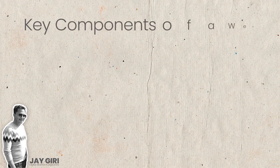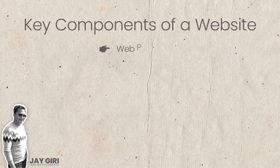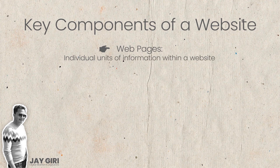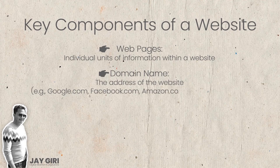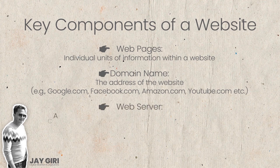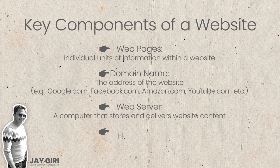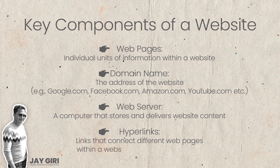Key Components of a Website: Web Pages — Individual Units of Information within a Website. Domain Name — The Address of the Website, for example, google.com, facebook.com, amazon.com, youtube.com, etc. Web Server — A Computer that Stores and Delivers Website Content. Hyperlinks — Links that connect different web pages within a website and to other websites.